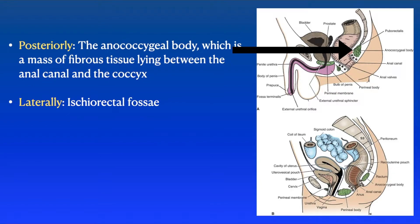Posteriorly, it is related to the anococcygeal body, which is a mass of fibrous tissue lying between the anal canal and the coccyx. Laterally are the ischiorectal fossae on both sides.